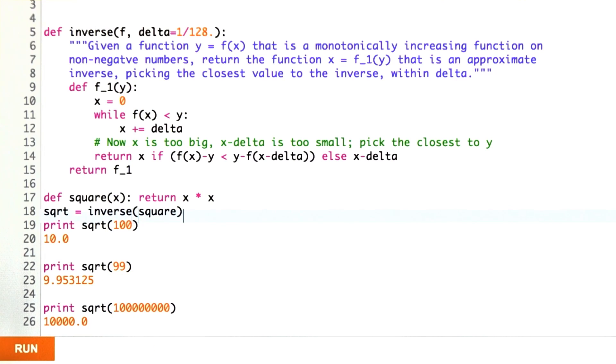When we ask for the square root of 99, we get 9.95 something, and that's pretty close, although there are more accurate representations that the computer could come up with.